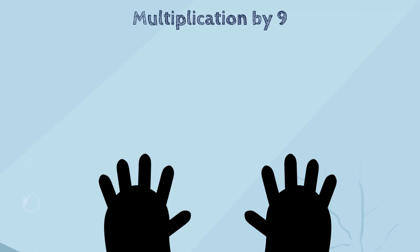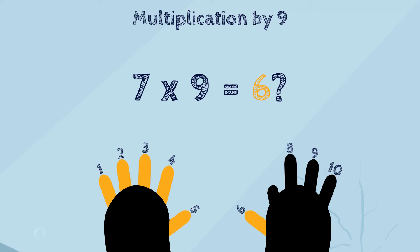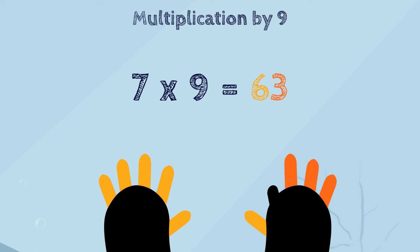Now, let's multiply 7 by 9. To do this, we'll fold down the 7th finger. So, now we have 6 unfolded fingers to the left of the folded finger, and 3 unfolded fingers to the right. So, the answer to 7 times 9 is 63.